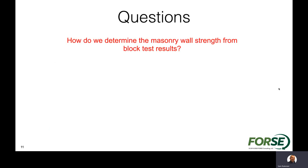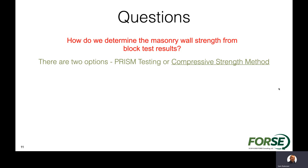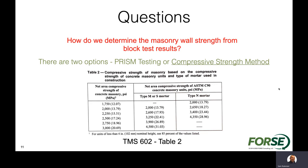How do we determine masonry wall strength from block test results? There are two options: prism testing or the much more common compressive strength method. The compressive strength method involves becoming familiar with a table from TMS, understanding the actual block strengths — information we can get from block manufacturers — and then the mortar we specify. With those two components, we can determine the overall net area compressive strength of the concrete masonry assembly.